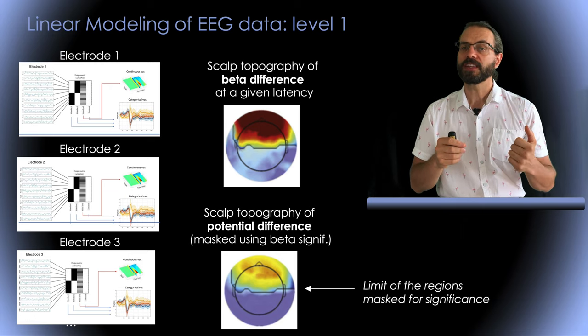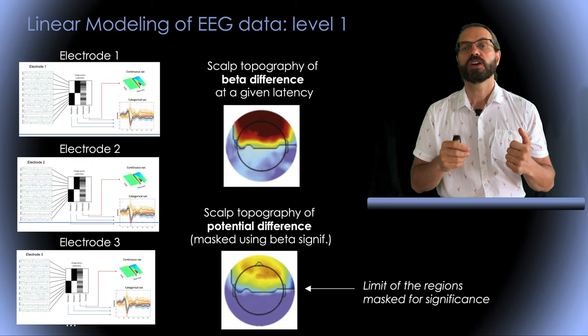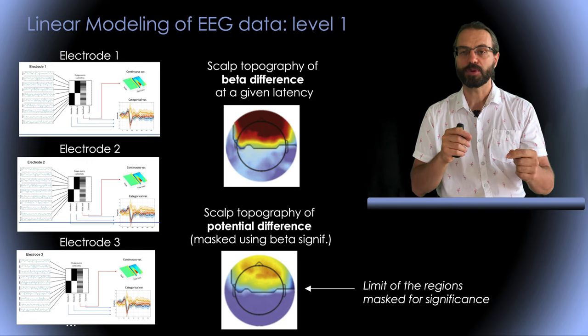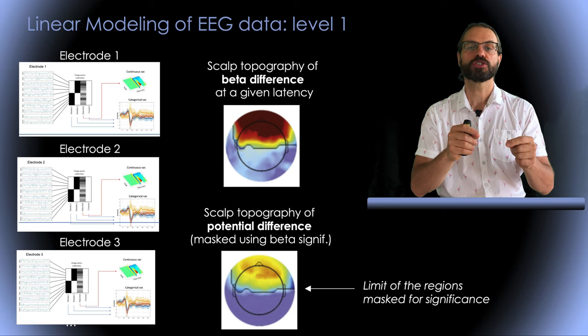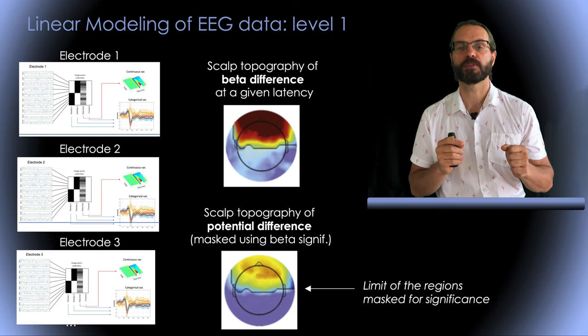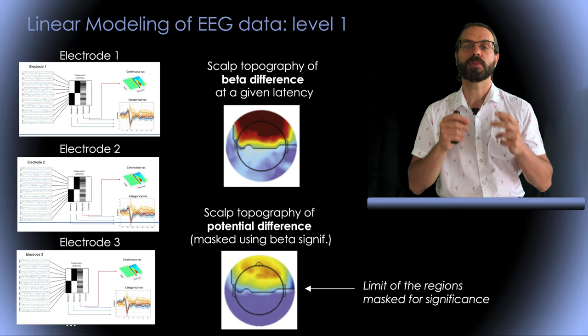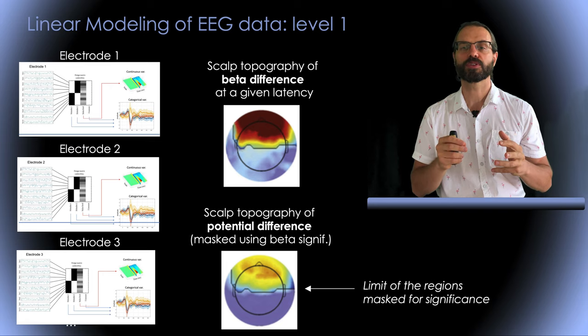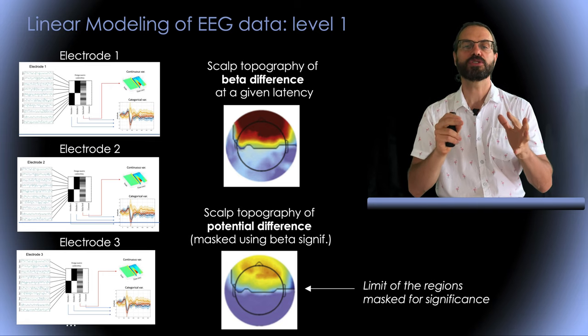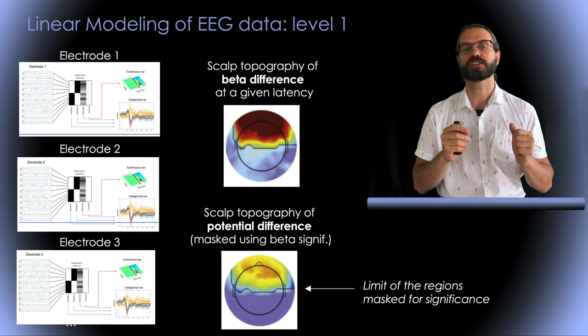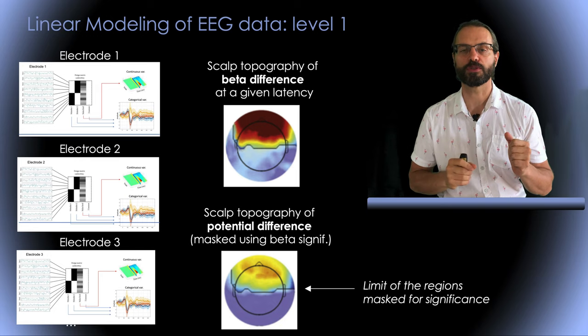Note that we really fit a large number of models here. One model at each sample multiplied by the number of electrodes, so of course we need to correct for multiple comparisons. There are multiple ways to correct for multiple comparisons and I invite you to again look at the statistics lecture linked in the description for more information.